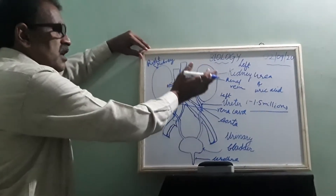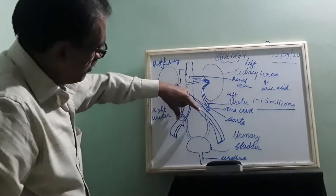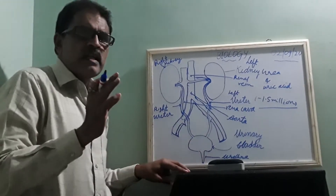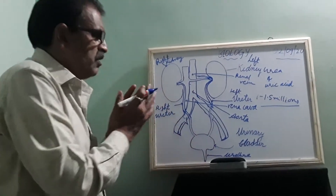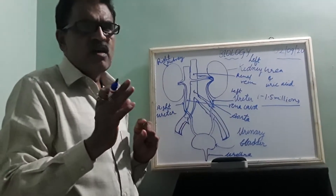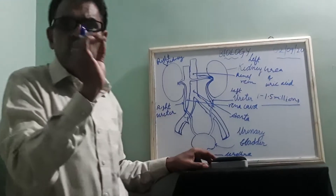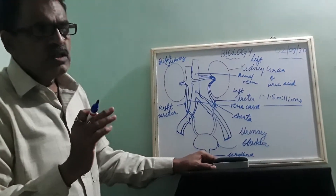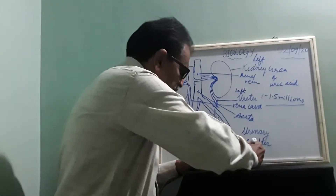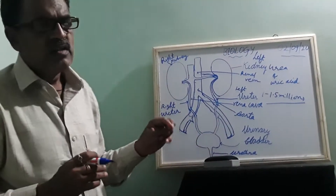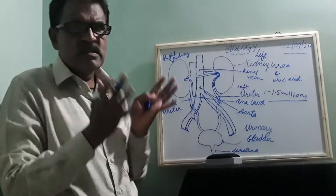Reabsorption takes place: useful material goes back, and waste comes through the ureter and passes through the urinary bladder. This bladder is a muscular part made of elastic muscles, giving it the capacity to expand. Urine is stored there because urination is sometimes voluntary — we control it until the bladder fills sufficiently.